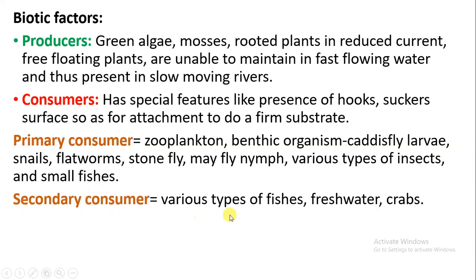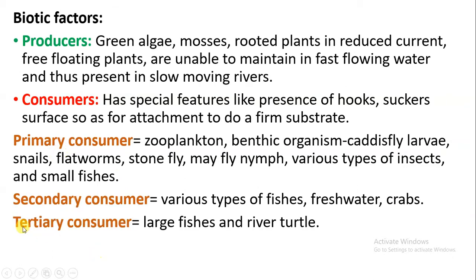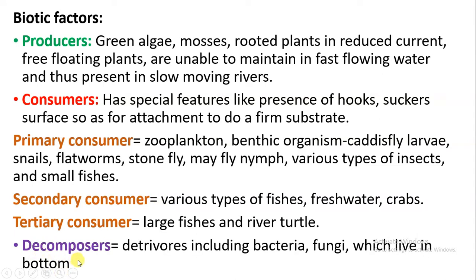Secondary consumers include fishes and freshwater crabs, which are dependent on the primary consumer animals. Tertiary consumers include large fishes and river turtles, which are dependent on the secondary consumers. Decomposers are detritivorous in nature — like bacteria and fungi — which live at the bottom of the river and carry out decomposition of dead organisms.